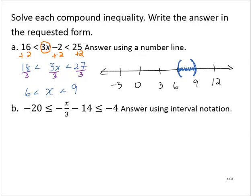Exercise B. Negative 20 is less than or equal to negative x over 3 minus 14 is less than or equal to negative 4. I identify the variable term. And I will isolate it by adding 14 to all three parts of the inequality.